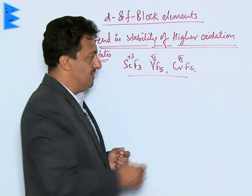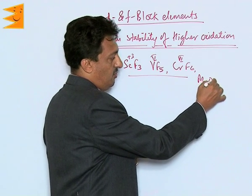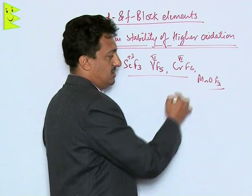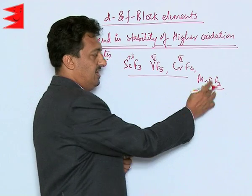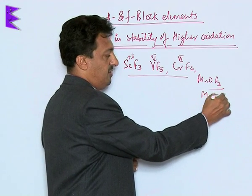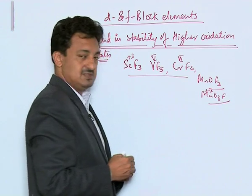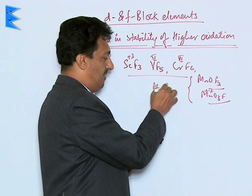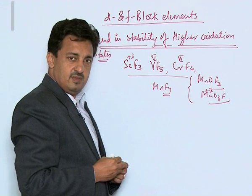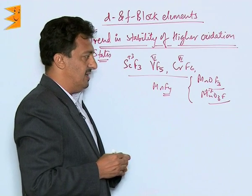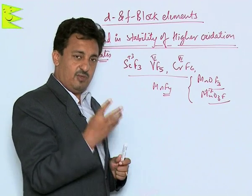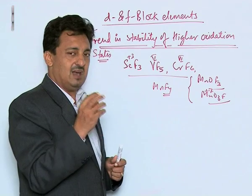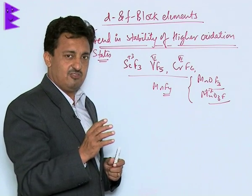After the first half of the 3d series, we don't find any element forming more than a trifluoride. For manganese, the maximum fluoride formed is MnF₄, and it can also form MnO₃F where it exists in the +7 oxidation state. So fluorides allow these early transition elements to form stable compounds in their highest oxidation states.